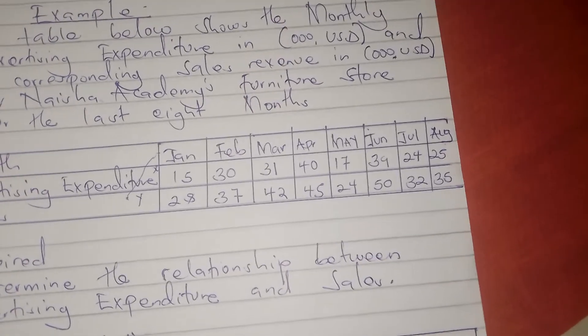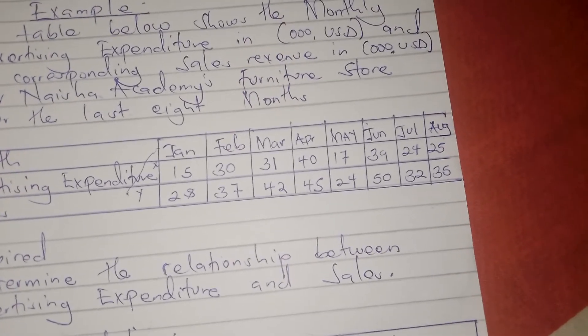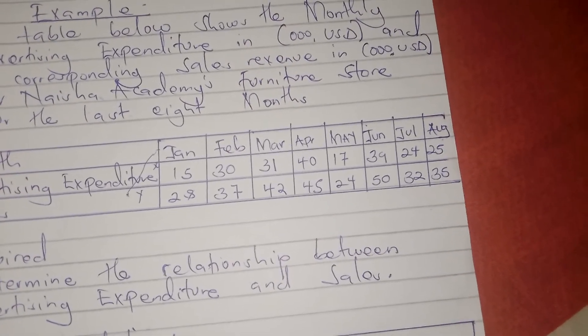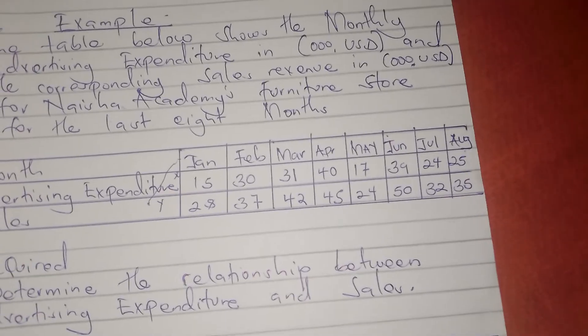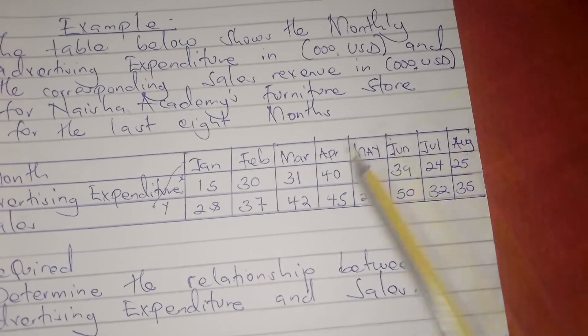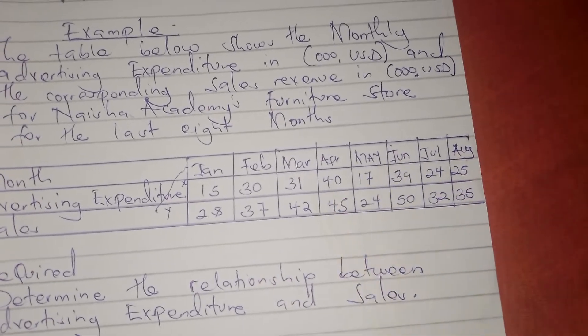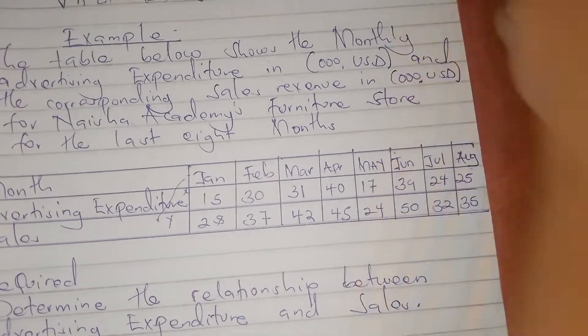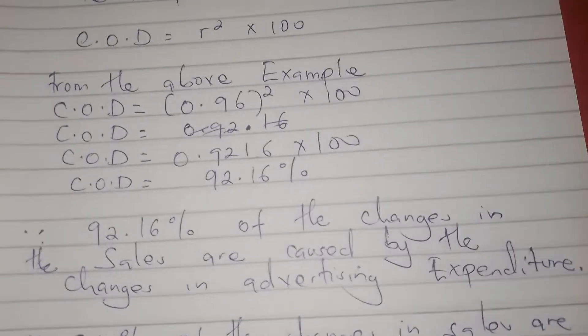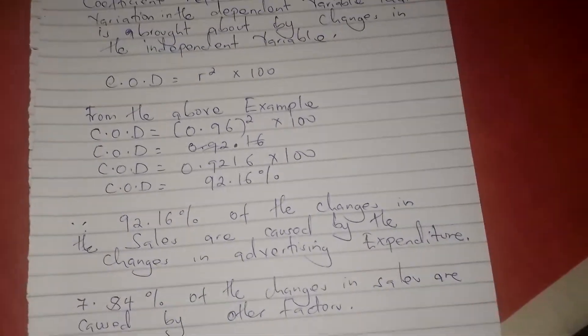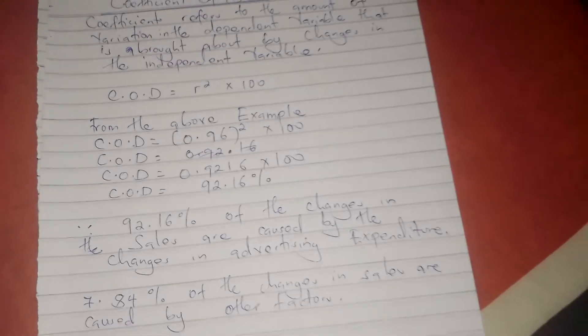So 92% of the changes in sales are caused by the changes in advertising expenditure, according to this question. That is how we calculate the coefficient of determination.